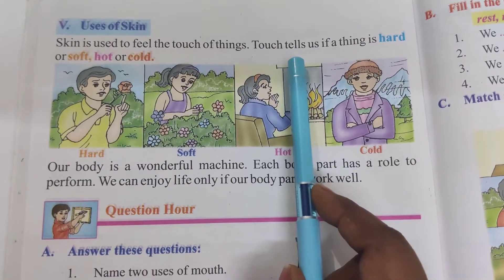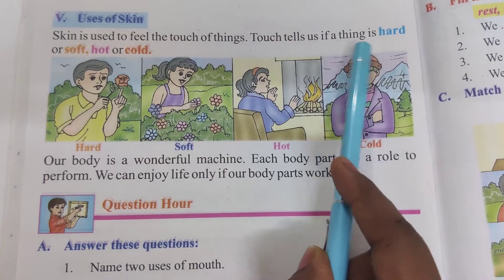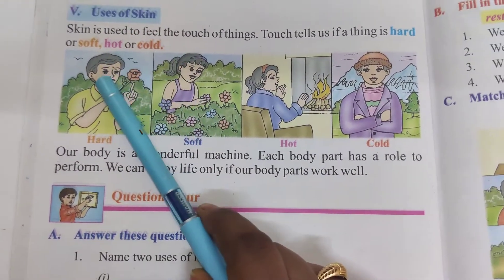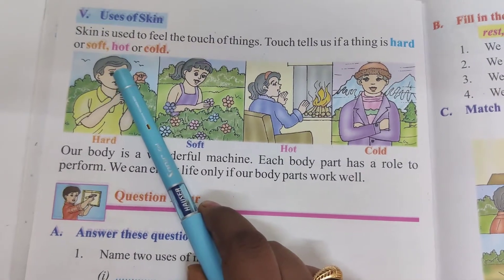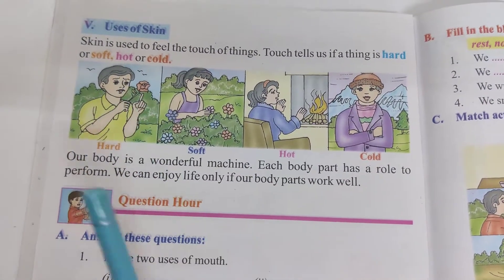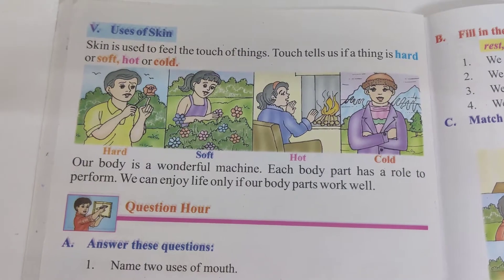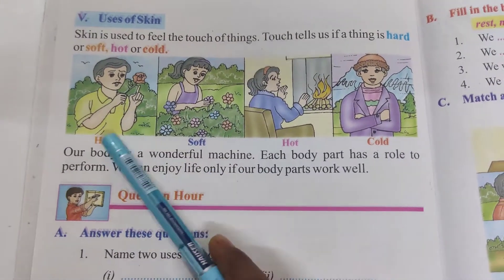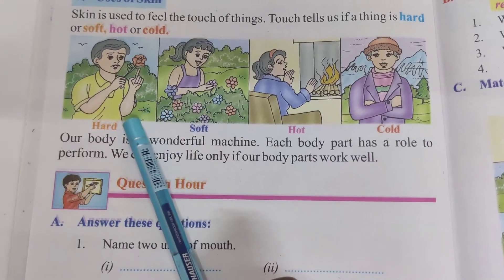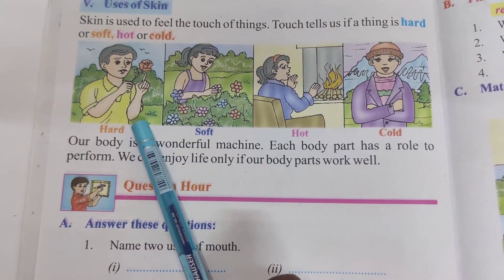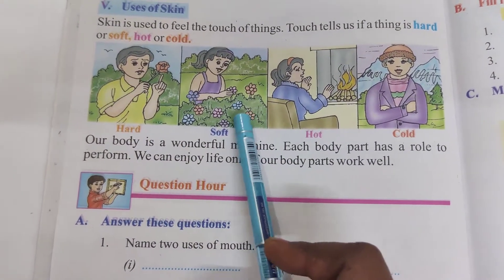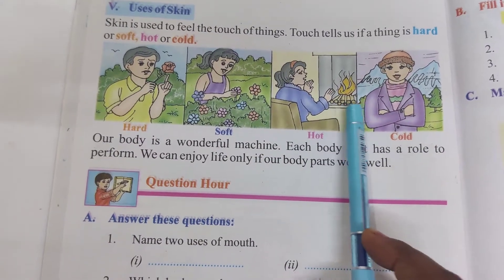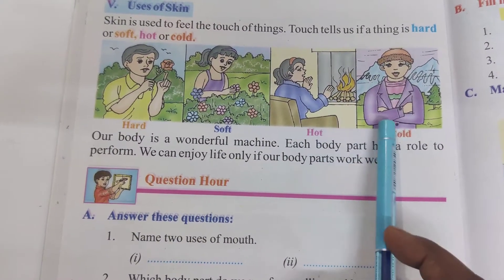Touch tells us if a thing is hard, soft, hot or cold. Look at the pictures — this thing is hard, flowers are soft, and we can feel hot and cold things through our skin.